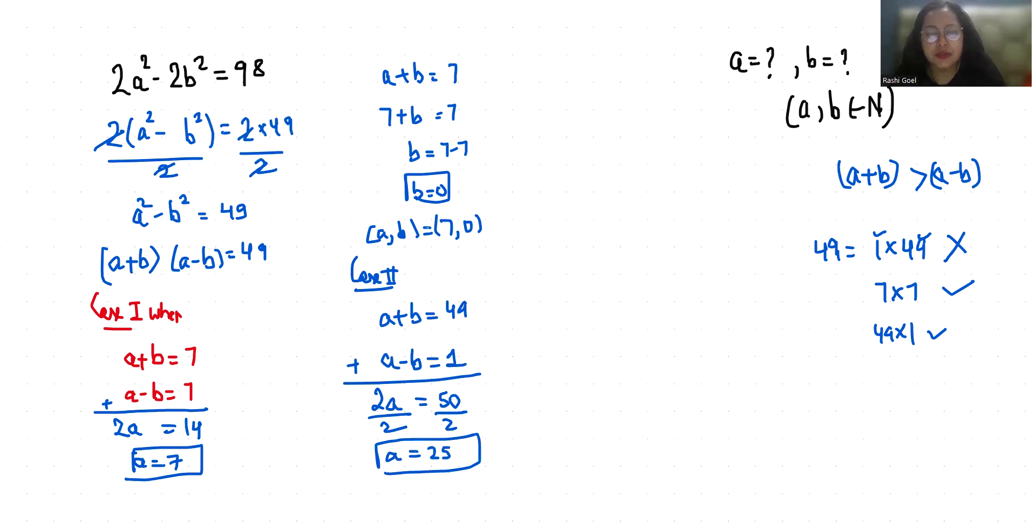So if a+b is 49 and a is 25, then b is 49 minus 25 which is 24. Here in this case the value of a and b is 25 and 24.